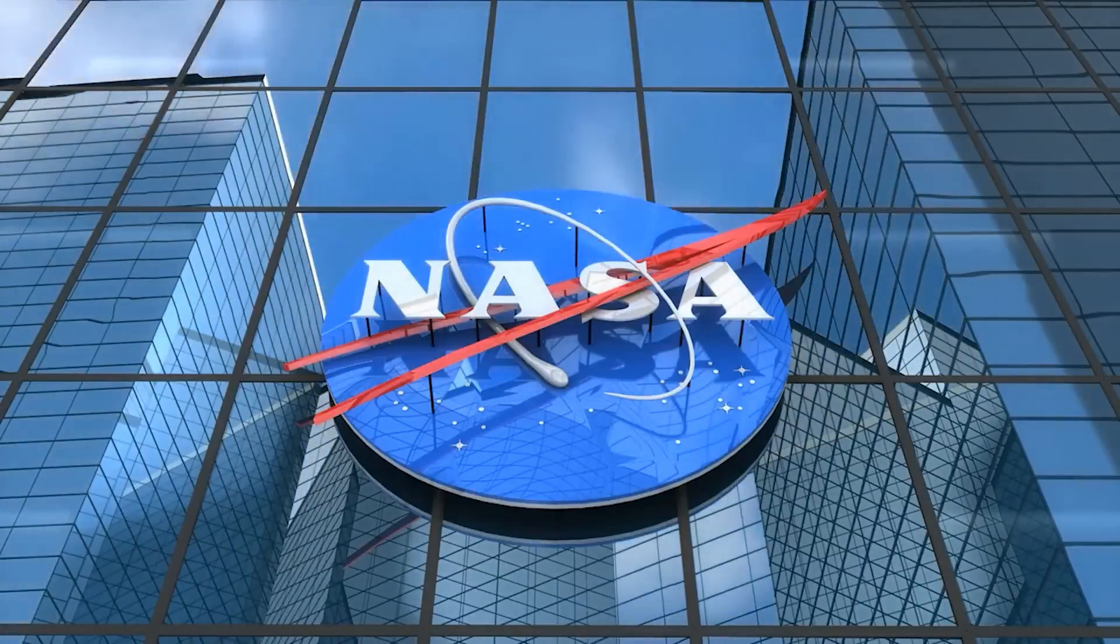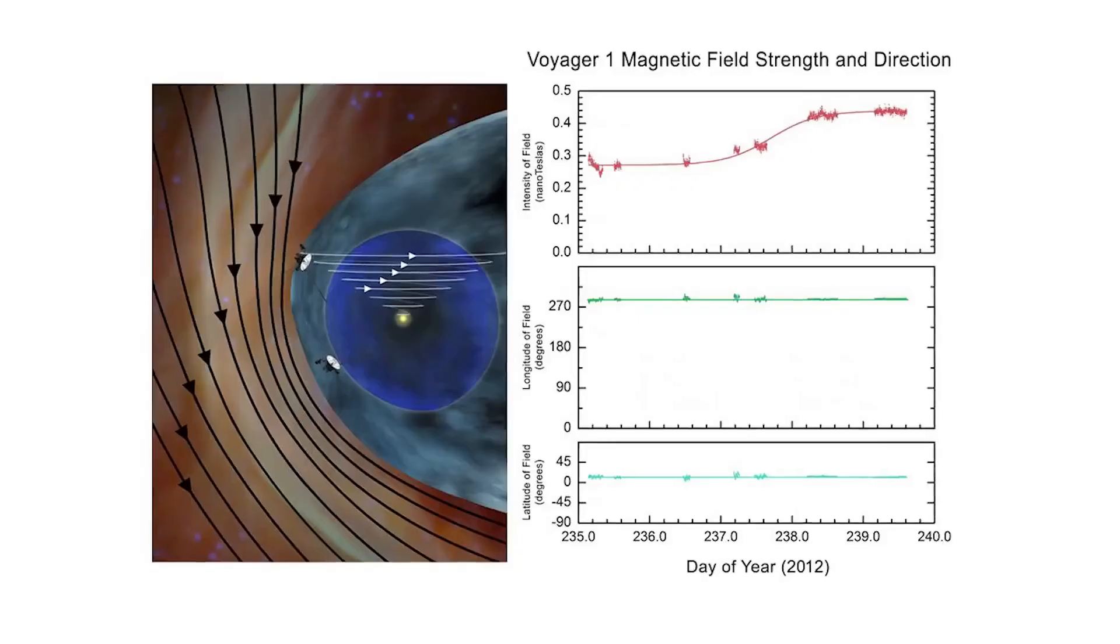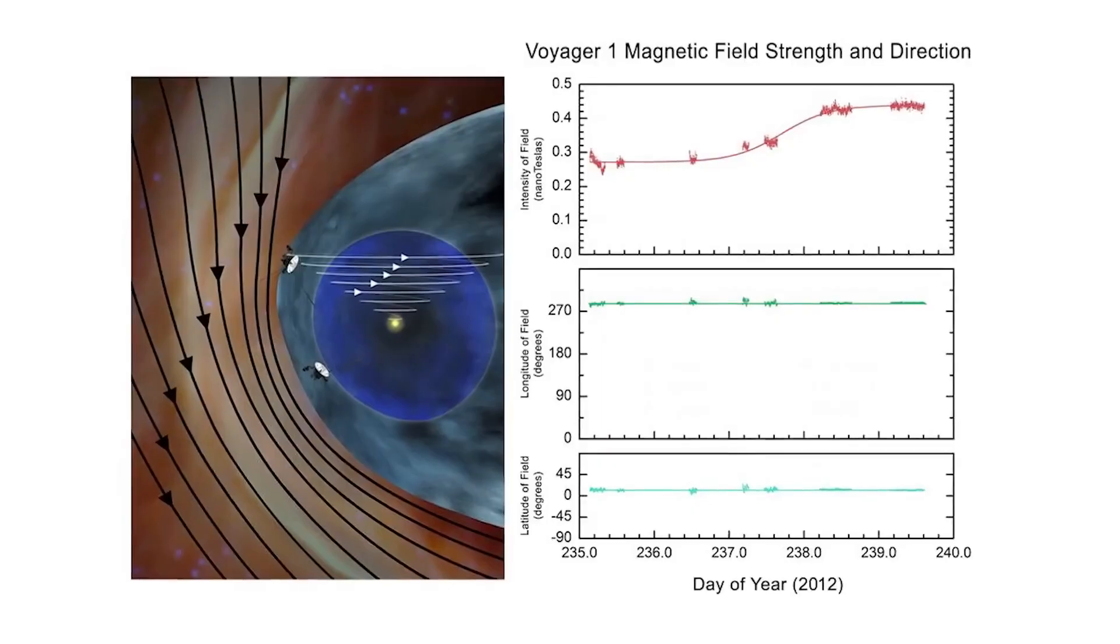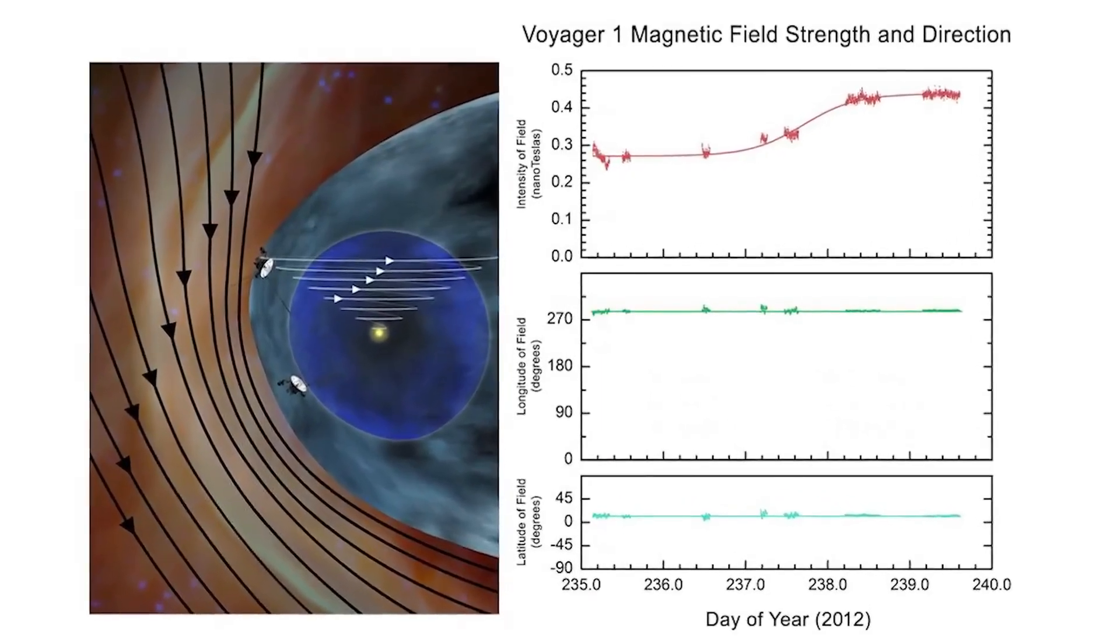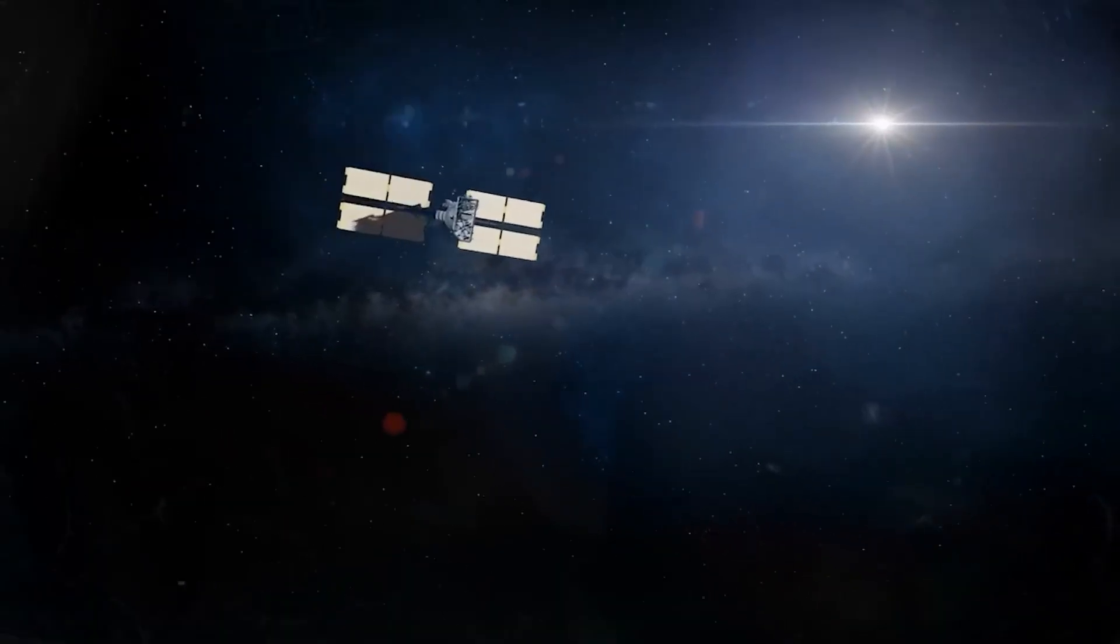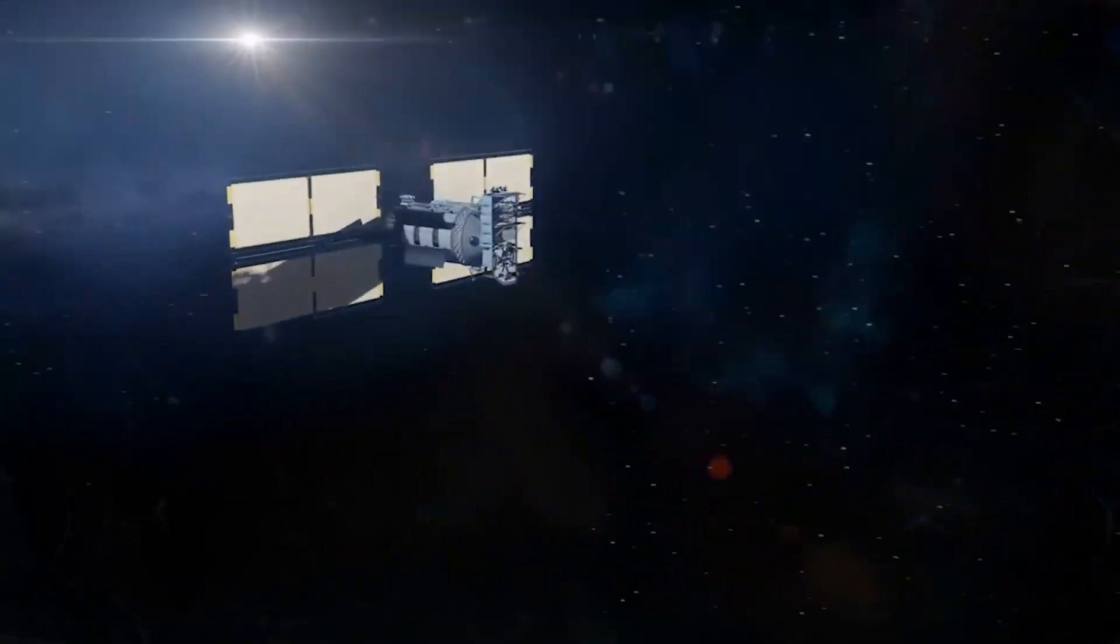Now, this is quite a story from NASA because for the second time in history, a man-made object has left our solar system. NASA is saying the Voyager 2 probe is now in a space between the stars after exiting the sun's protective bubble, which is called the heliosphere.